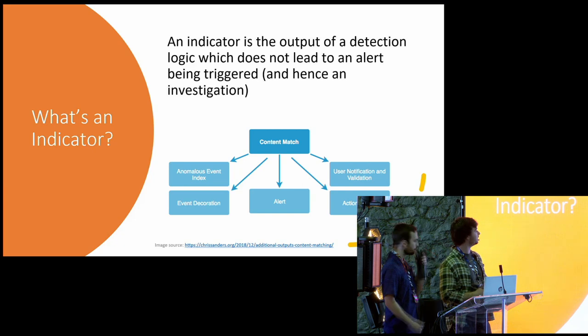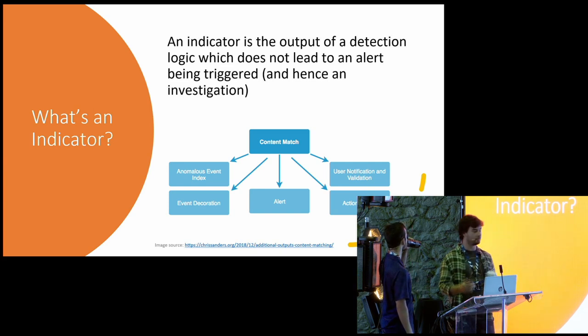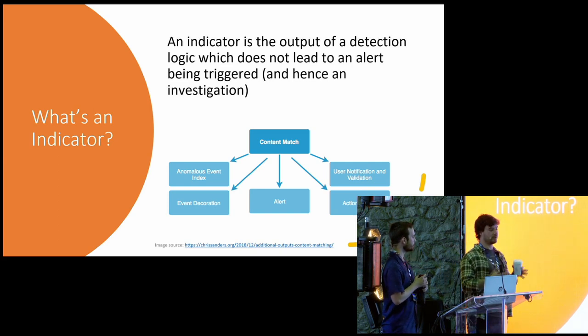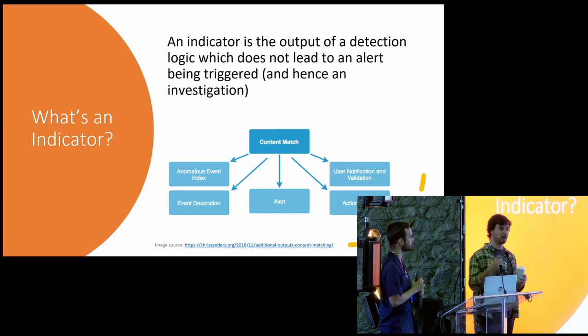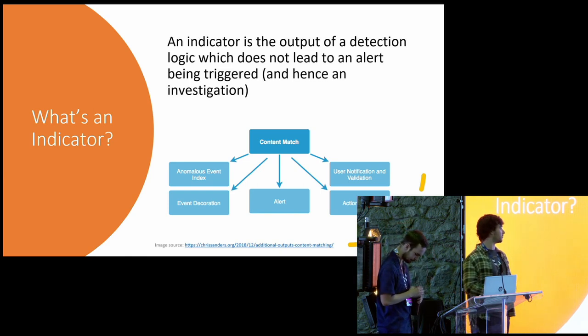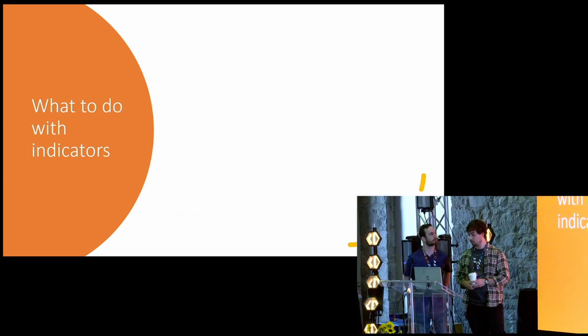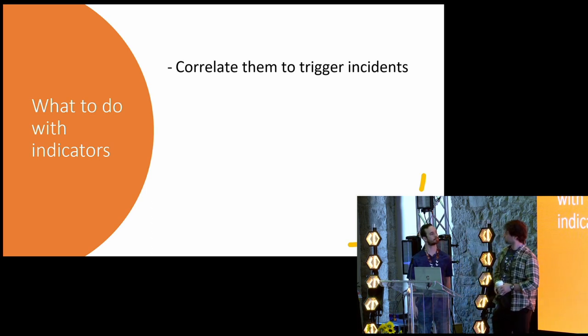And what are the indicators? What do we mean by indicator? It's the output of detection logic, of a rule or content match, whatever you want to call it. But it's mainly the output. The main output, you know, is probably the alert. So there's a SOC analyst that will investigate the output of this detection logic. But we added one that is an indicator. So, what is an indicator? And what do we do with them? We correlate them to trigger incidents.